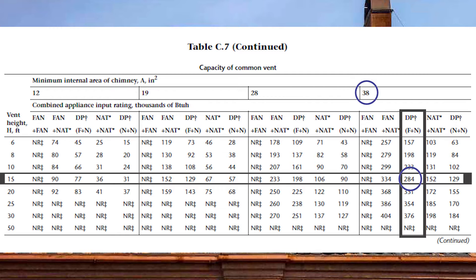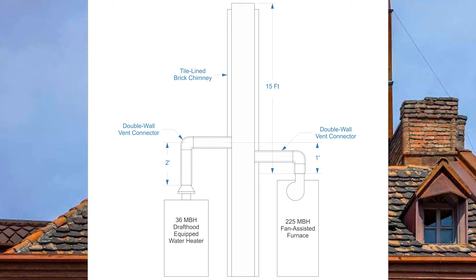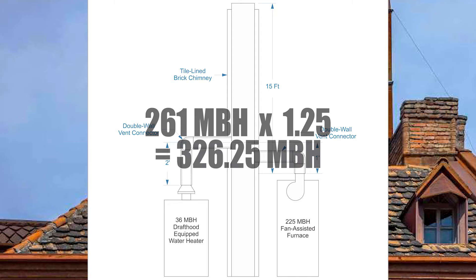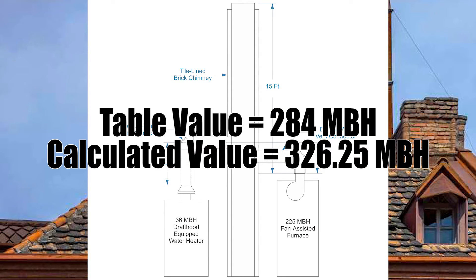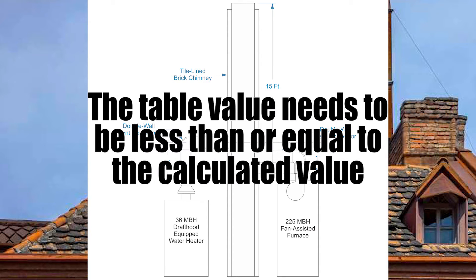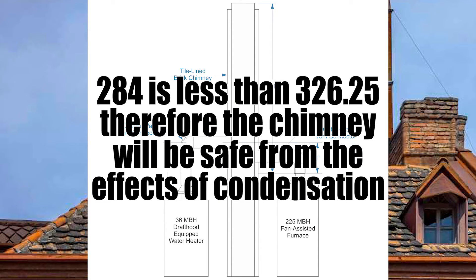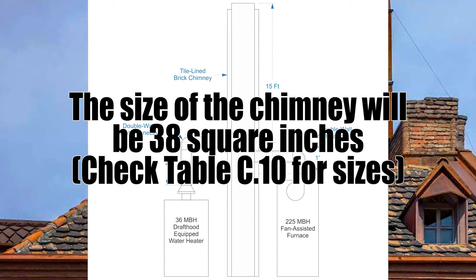Now we need to check it mathematically. The combined BTU load of 261 MBH times 1.25 equals 326.25 MBH. Comparing that to the table value of 284 MBH — the table value must be less than or equal to the calculated value, and it is: 284 is less than 326. This tells us a 38 square inch chimney is perfect for this application.